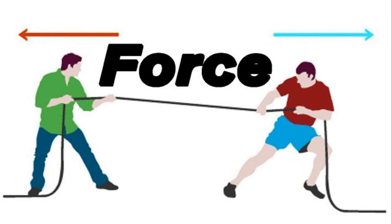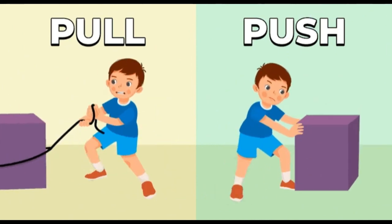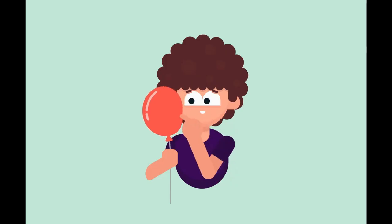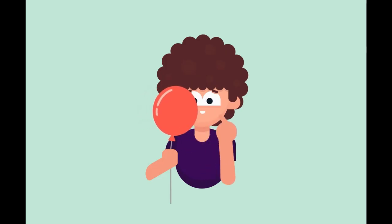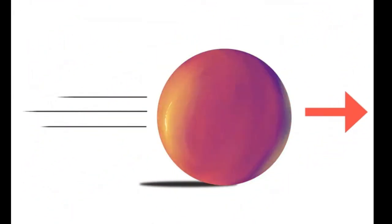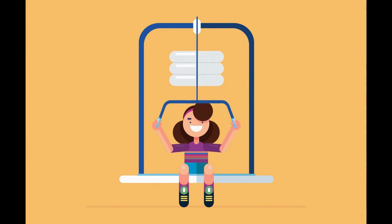It is necessary to apply force for doing all these actions. Force is applied to an object to pull it or push it in any manner. No object changes its position on its own. Force is required to move an object. Force is used to change the direction of an object in motion or to stop it.